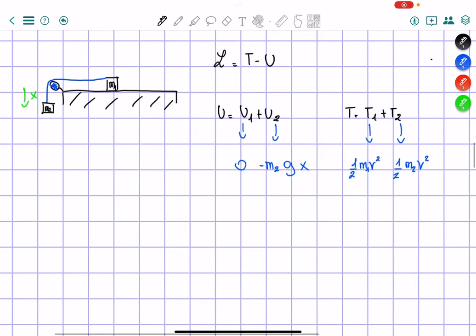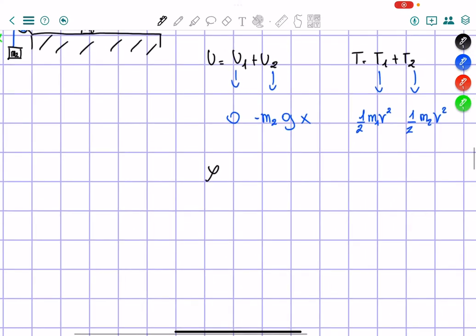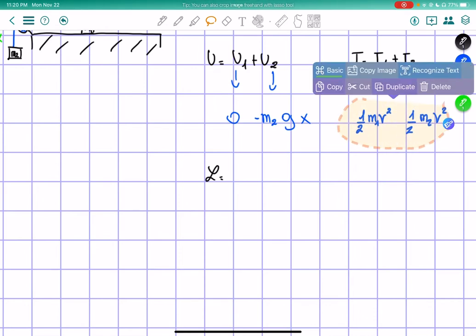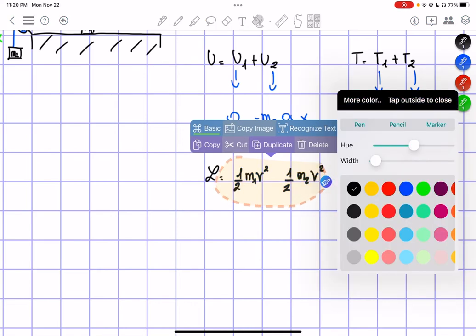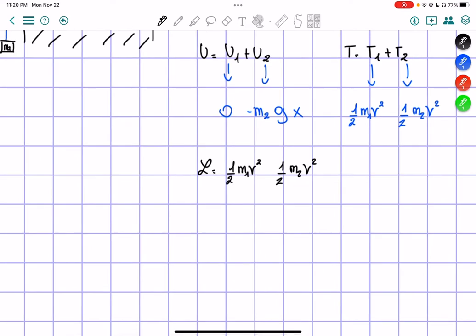Alright, so right now we can just put in the Lagrangian. So the Lagrangian is going to be equals to this part right here, and then this other M2g. Here there will be a constant, and then plus M2g x.